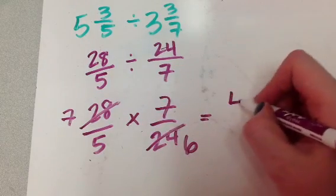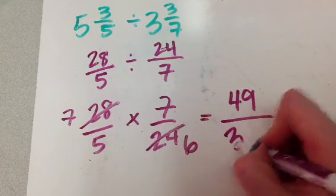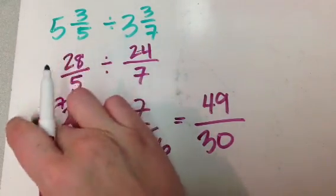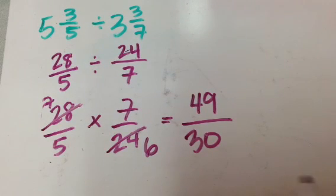7 times 7, 49, 5 times 6 is 30, okay? So now I have my answer. I've got to ask myself my two questions. Question one, is it a proper fraction? And my answer is no, it's not, right? The 49 is larger than the 30.